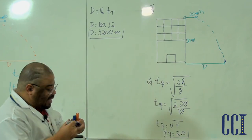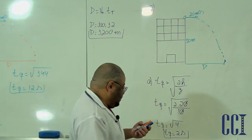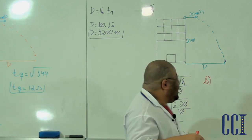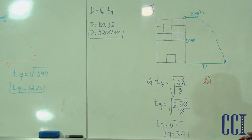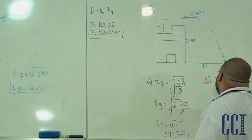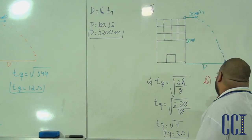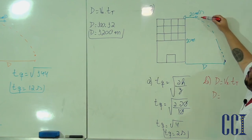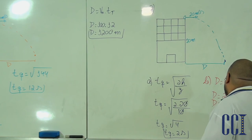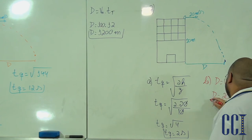Então 2 segundos é o tempo para chegar no solo. O item B quer saber o alcance. Já que ele só está caindo, o tempo de queda é igual ao tempo total. Usando D = Vx · t = 20 × 2 = 40 metros. Esse vai ser o nosso alcance.